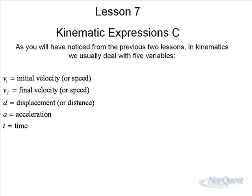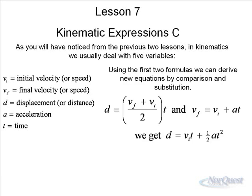All of the equations that we're dealing with up to this point have one or two or three of those variables in them. Sometimes we could have up to four variables. But using the first two formulas that we've developed—d = (v_f + v_i)/2 × t and v_f = v_i + at, which is just a changed version of a = (v_f - v_i)/t—it's just manipulated, still the same equation.